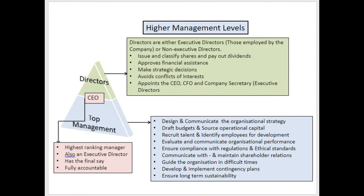When we look at the higher management levels we have two groups: the directors and top management, with the CEO right in between. We need to distinguish between two types of directors: executive and non-executive. Executive directors are employed and paid by the company, while non-executive directors are not employed by the company and are only paid when they actively attend meetings of the directorate or a subcommittee of the directorate.